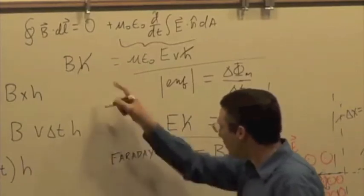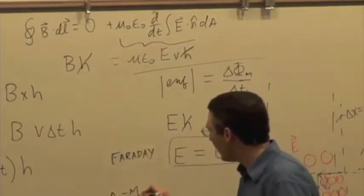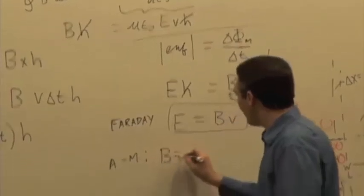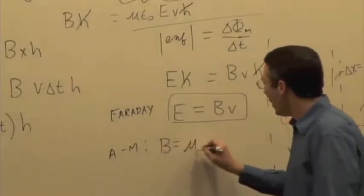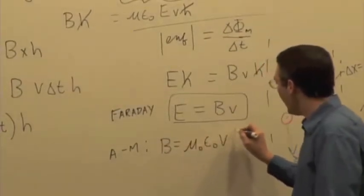Applying the Ampere-Maxwell law, I get B equals mu naught epsilon naught V times E.